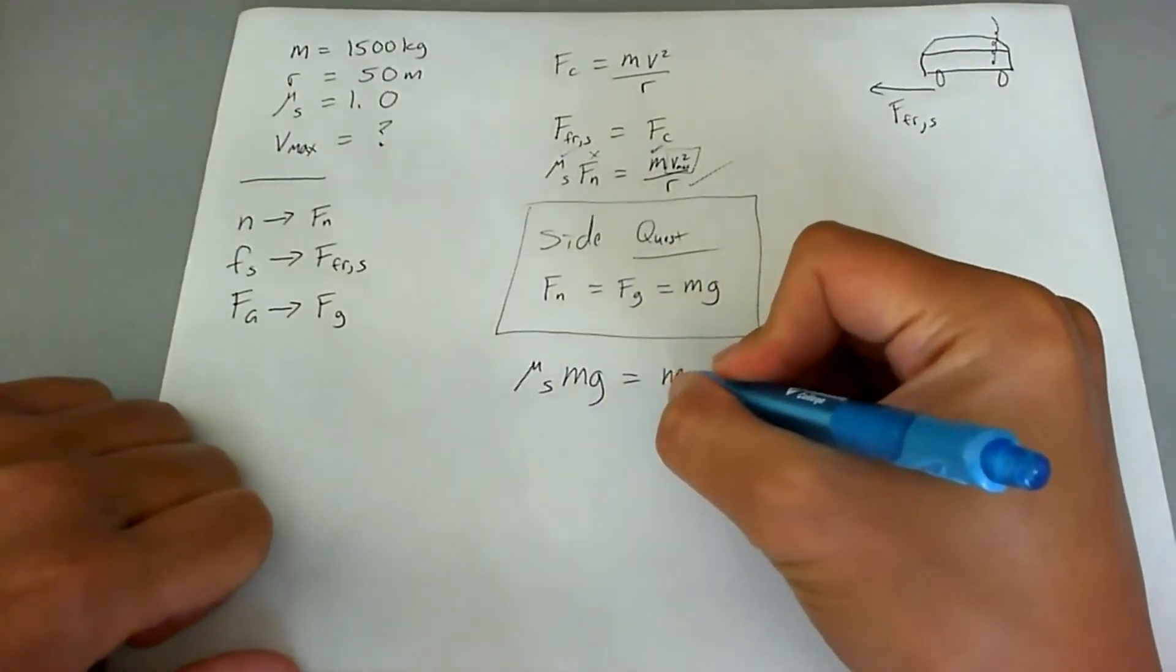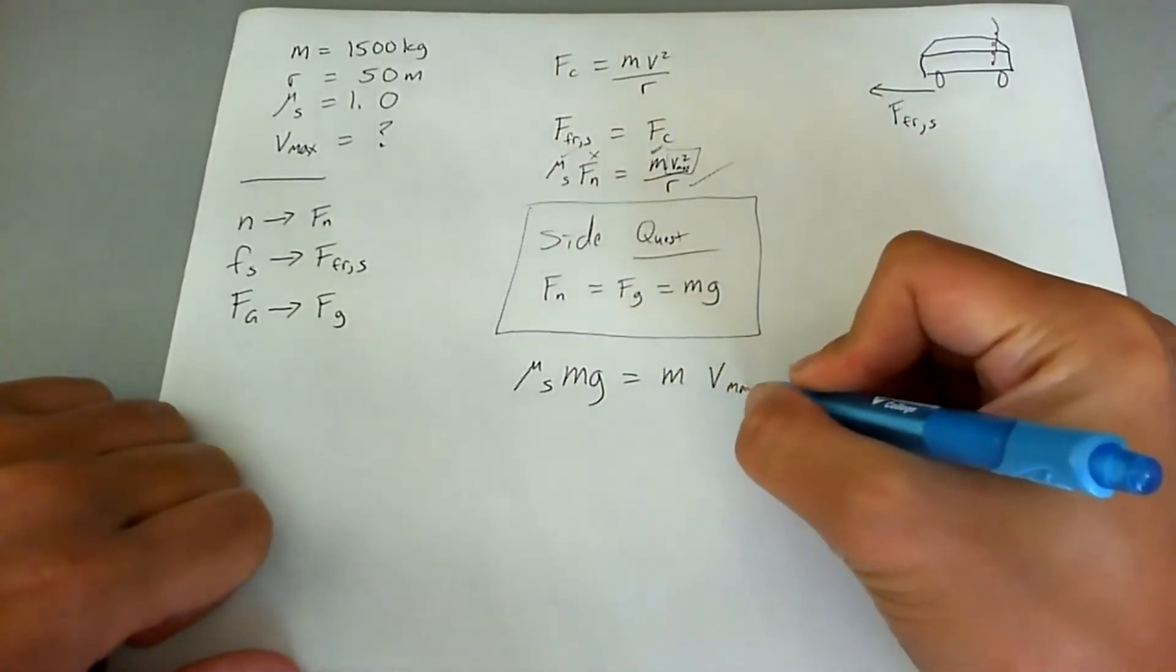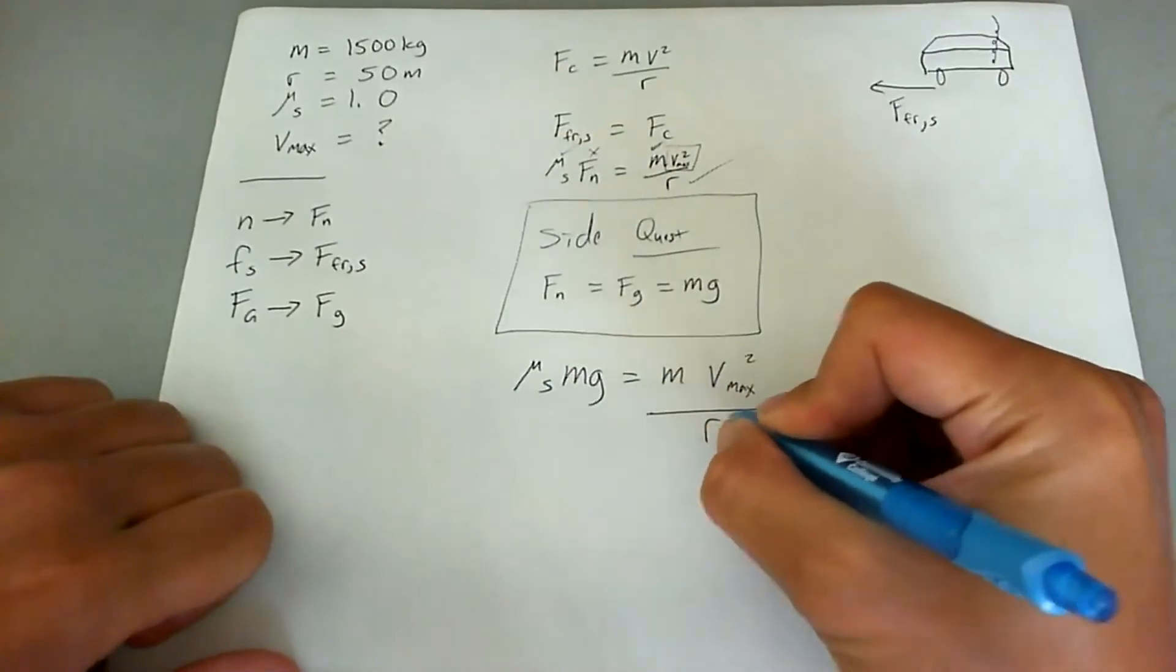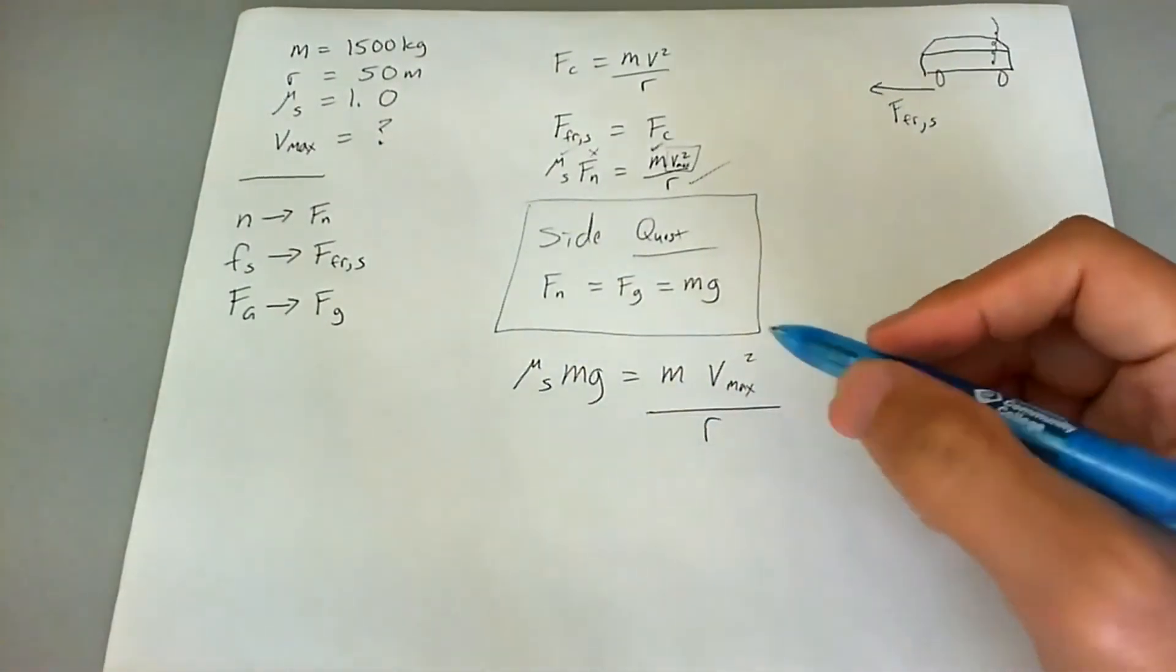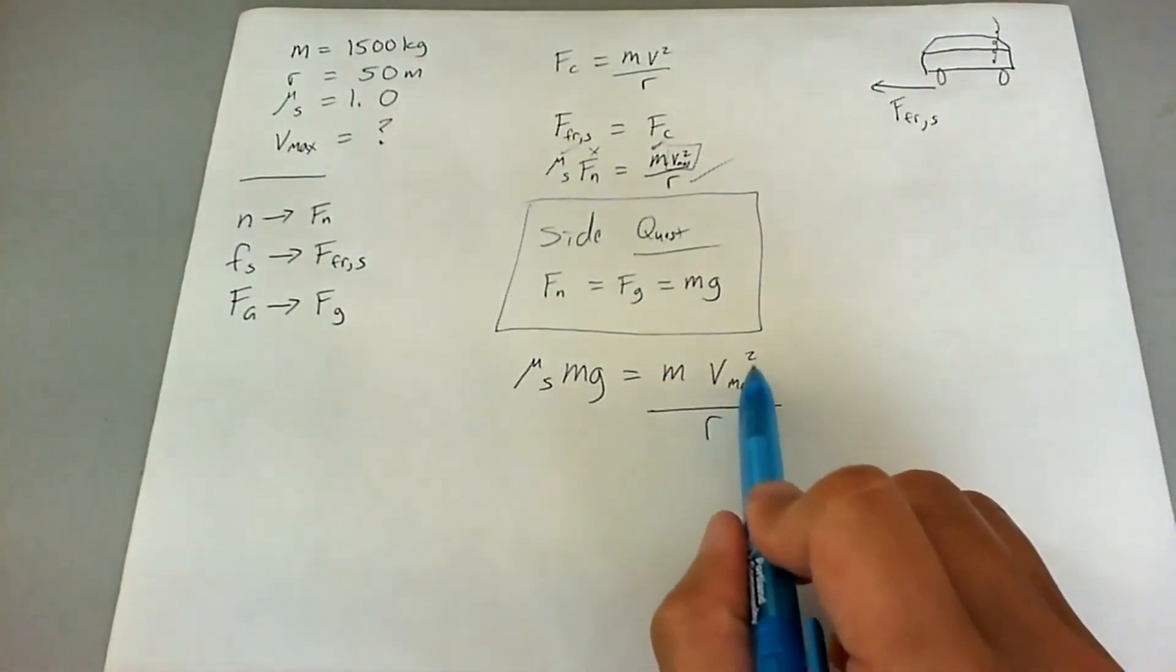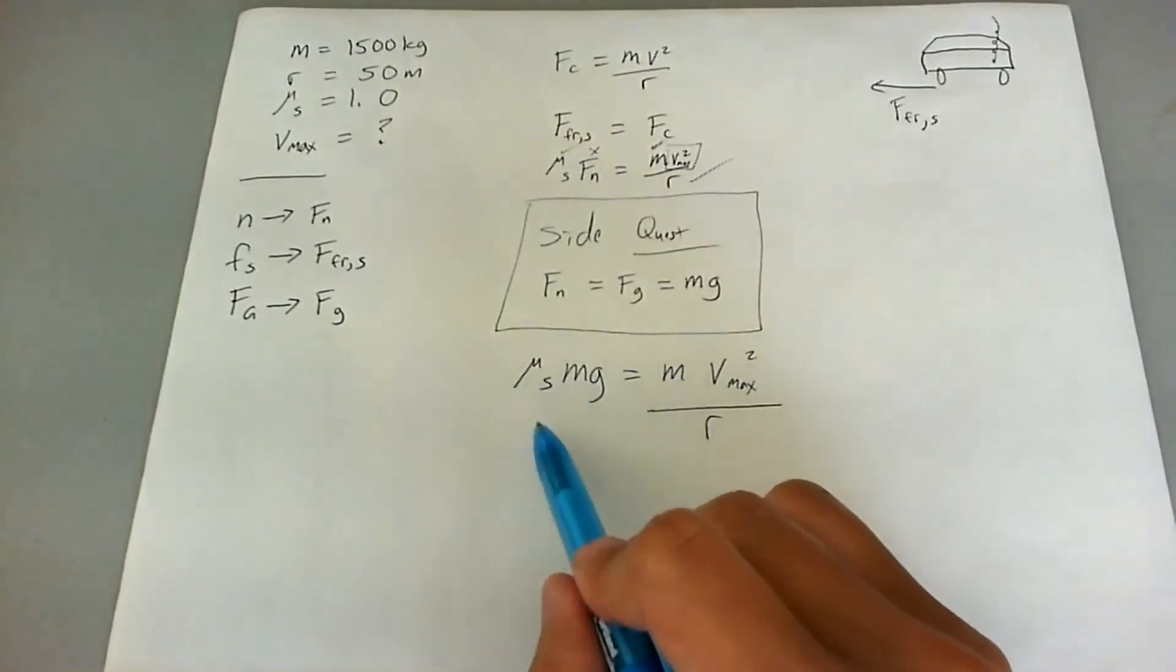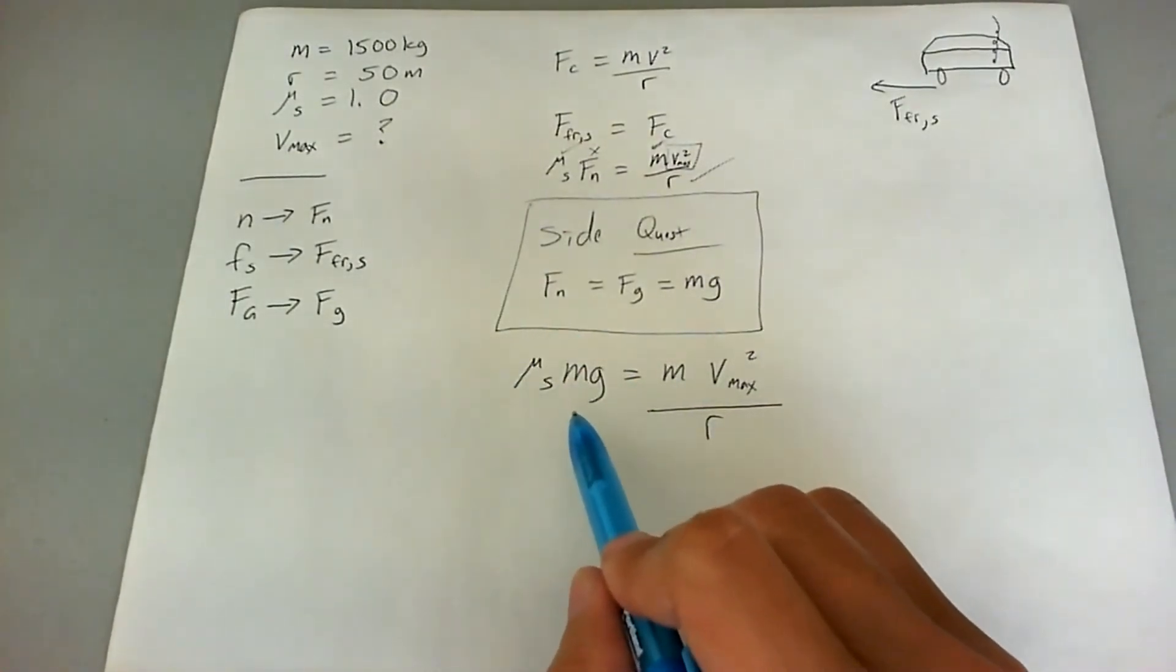And we're going to set that equal to m v max squared over r. And again, we know it's v max because we know that if it goes even faster, then the static friction force equation turns into a kinetic friction force equation.